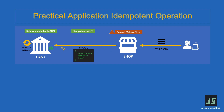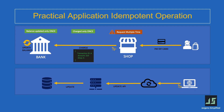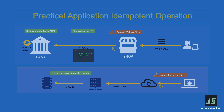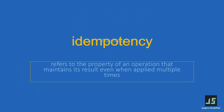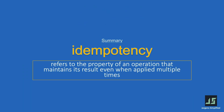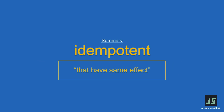Similarly, in database operations, idempotency guarantees that repeating an operation will not introduce duplicate records or modify existing data beyond the intended changes. In summary, idempotency refers to the property of an operation that maintains its result even when applied multiple times. Simply put, you can remember idempotent as operations that have the same effect. Thank you for listening.